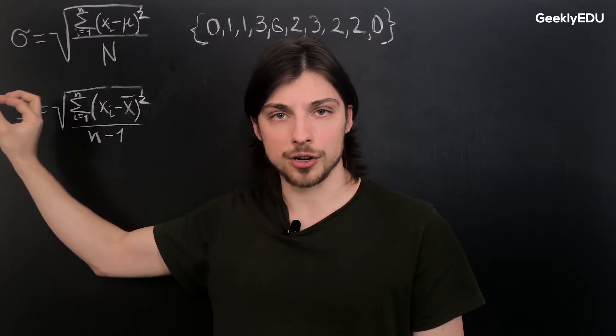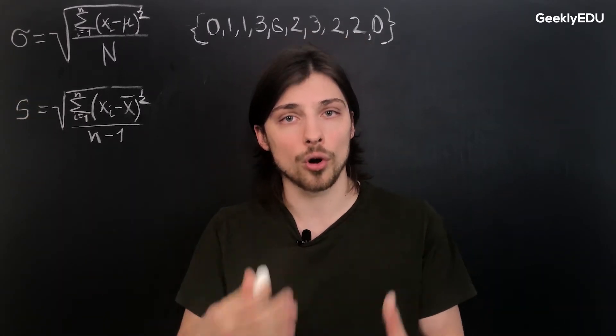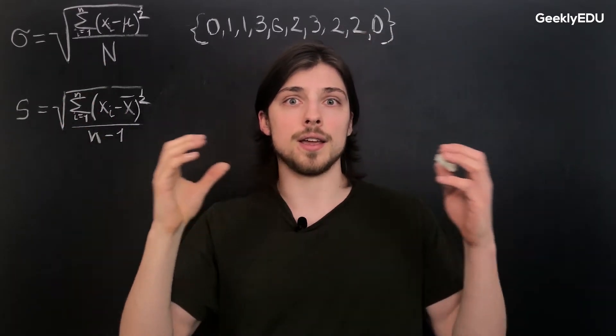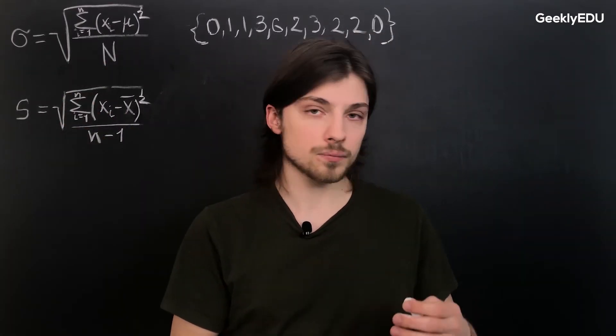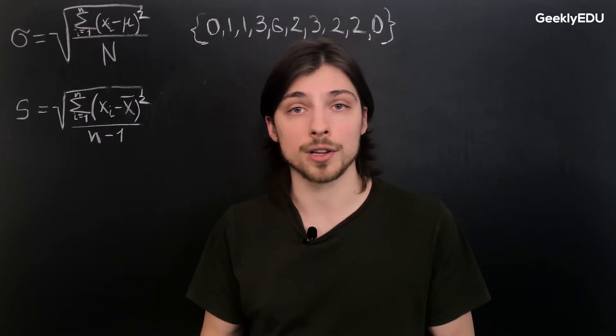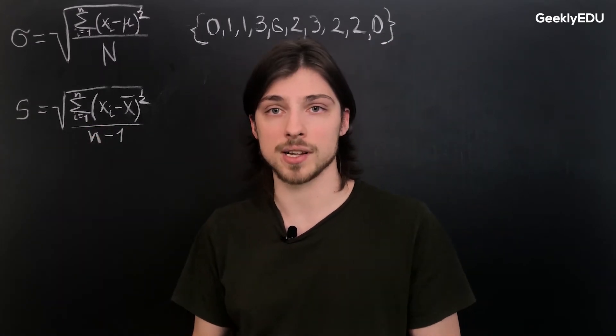The number here becomes larger, and we need to account for this smaller sample size to get a more accurate result, whereas with the population we know the entire population's values and we can calculate more accurately. So this just accounts for the bias that we have with a smaller sample size.